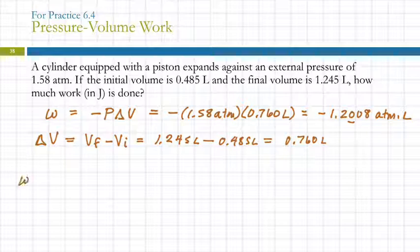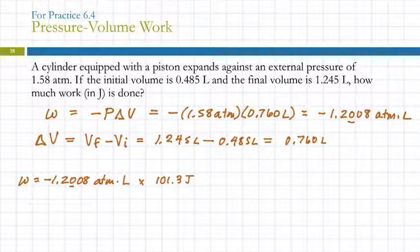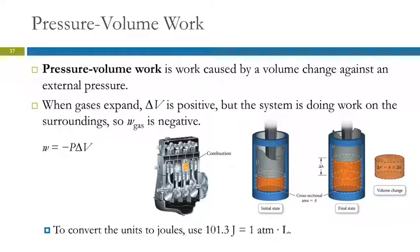So the work is negative 1.2008 atmosphere liters. So we need to use that conversion factor that 101.3 joules is equal to 1 atmosphere liter. And I'm just going to double check that I remember that correctly. 101.3 joules is 1 atmosphere liter.